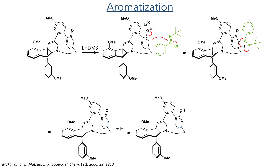With the enone installed, the authors proceeded to the final key reaction of the synthesis: aromatisation of the enone ring. First, an enolate was formed using LiHMDS, and this was reacted with N-tert-butyl benzenesulfinimidoyl chloride. This binds at the alpha position and deprotonates the beta hydride, oxidising the ring and forming a new double bond. This dienone ring rapidly undergoes keto-enol tautomerisation to produce the highly strained yet aromatic phenol ring.